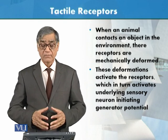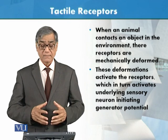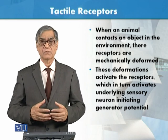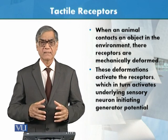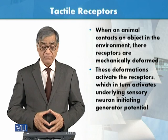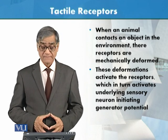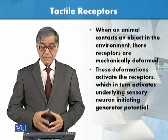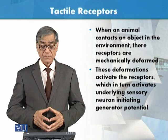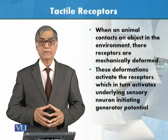When an animal contacts an object in the environment, the receptors are mechanically deformed. These deformations activate the receptors, which in turn activate the underlying sensory neurons, initiating a generator potential.